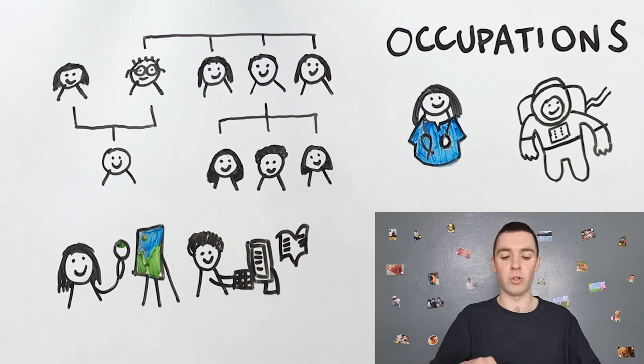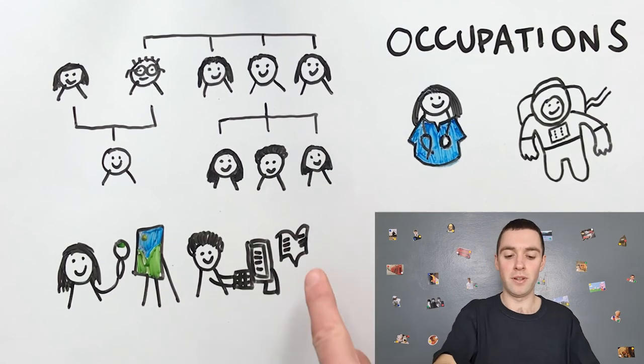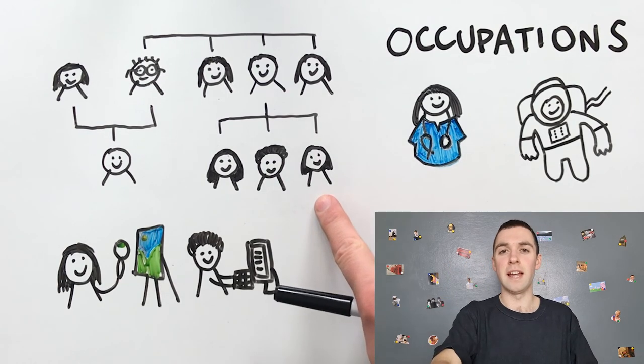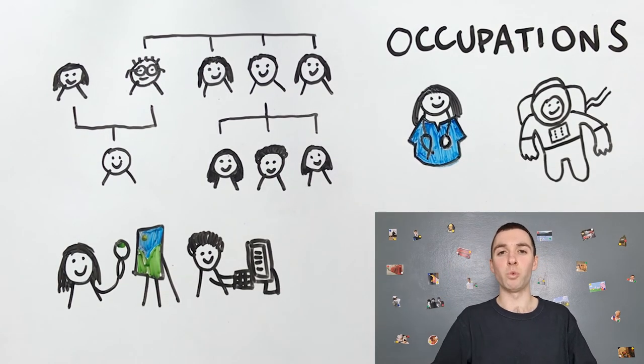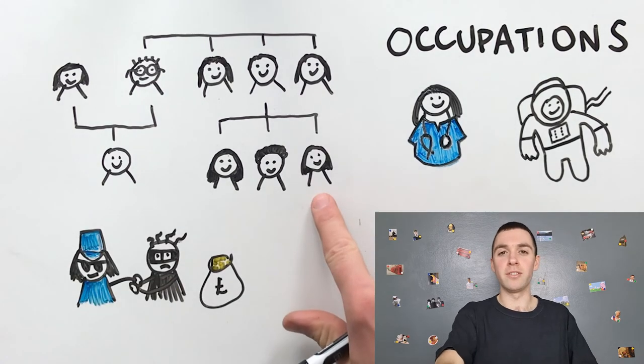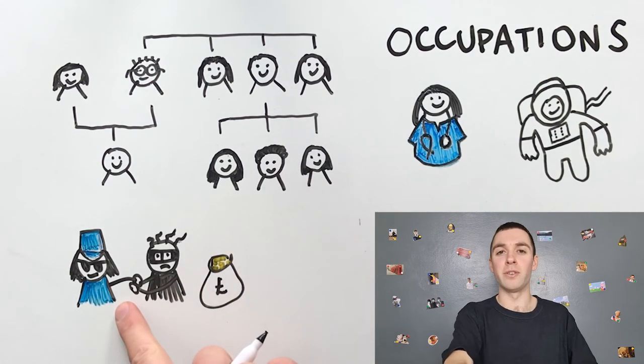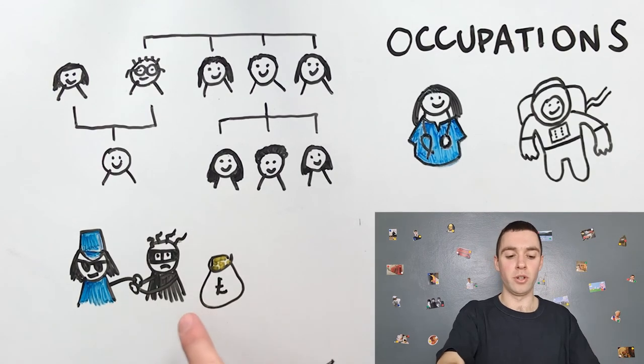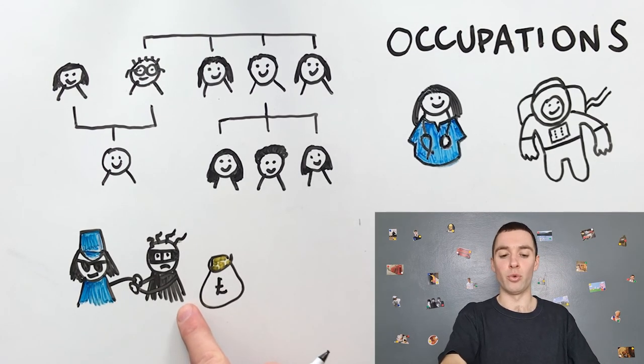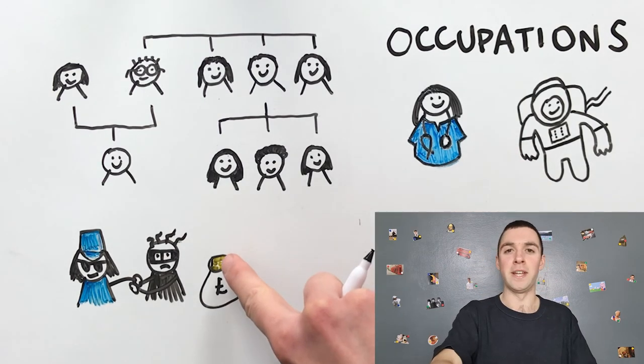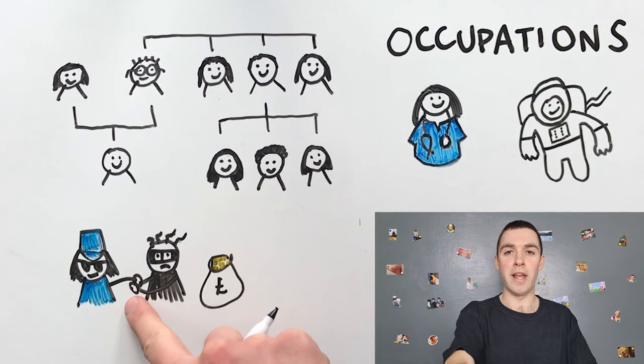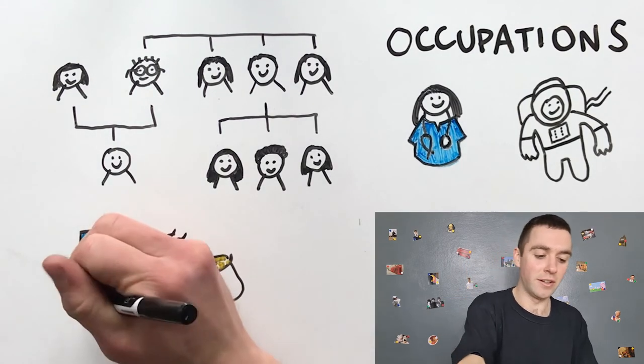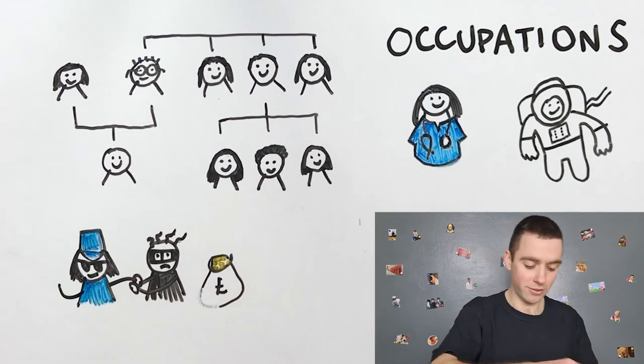My third cousin is a police woman. She stops robbers who steal money and arrests them. And she eats donuts.